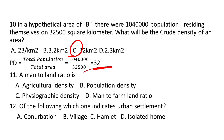Question number 11. A man-to-land ratio is: A. Agricultural density, B. Population density, C. Physiographical density, D. Man-to-farm land ratio. A man-to-land ratio is population density.